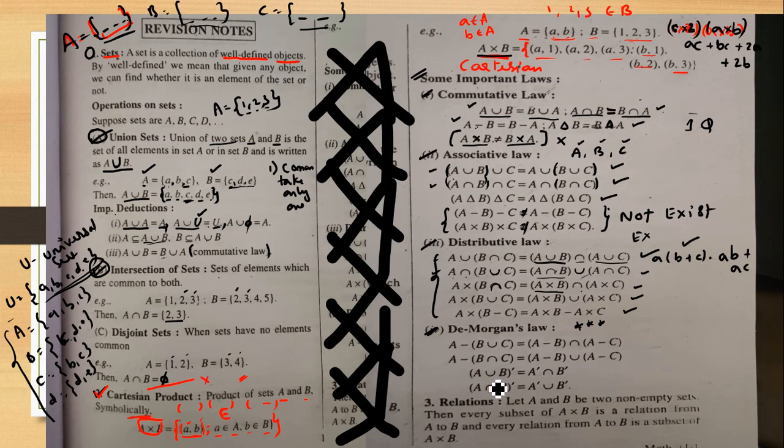This next topic is triple-star rated — very, very important. Think of it as a five-star hotel level of importance. Three-star rating — meaning it is highly likely to appear in the exam.